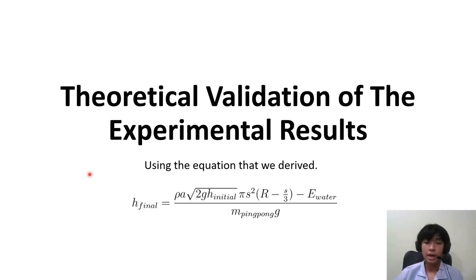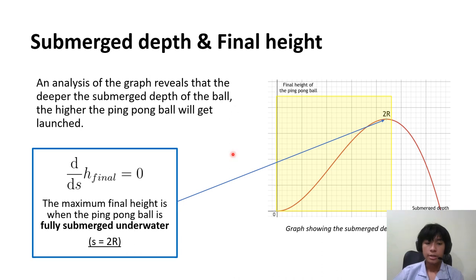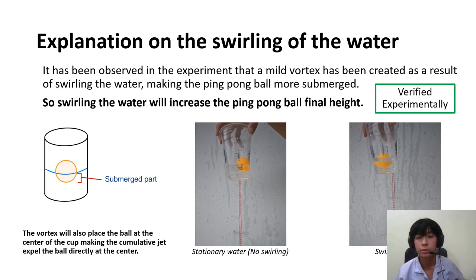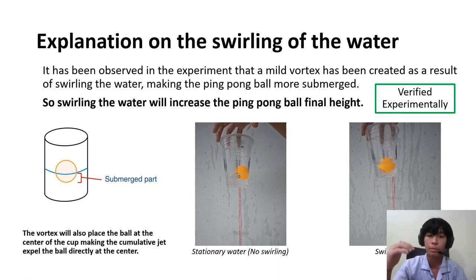So let's validate our experimental results. Here is the relation between the submerged depth and the final height. We can determine the maximum final height of the ping pong ball is when the ping pong ball is fully submerged underwater. A minor vortex is created as a result of swirling the water, making the ping pong ball more submerged, and will increase the ping pong ball's final height.